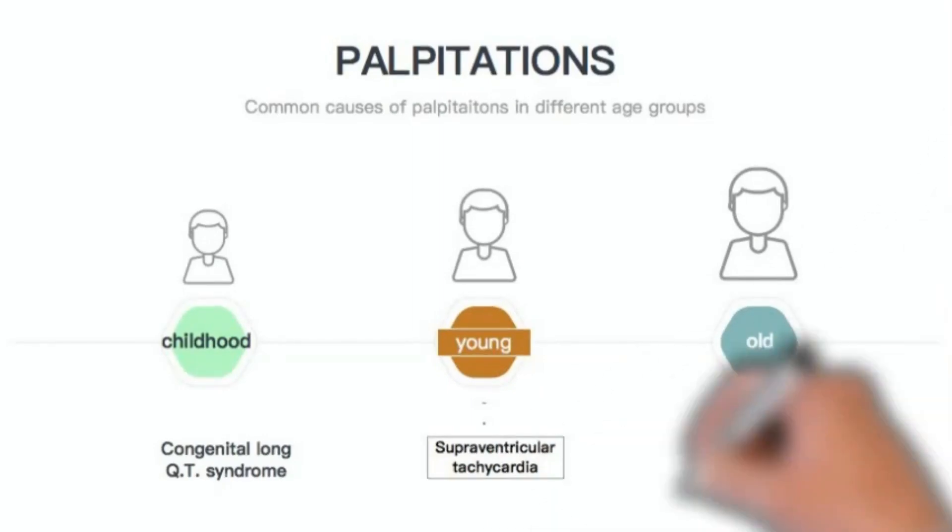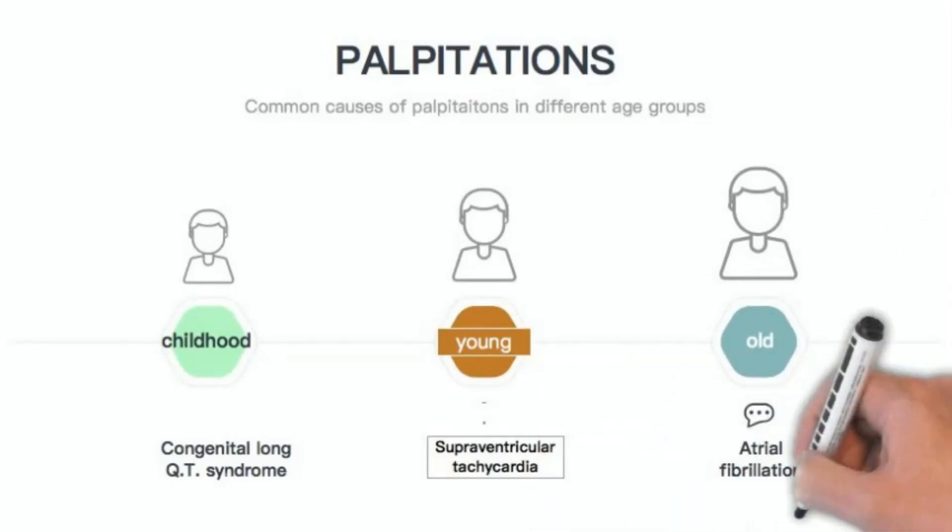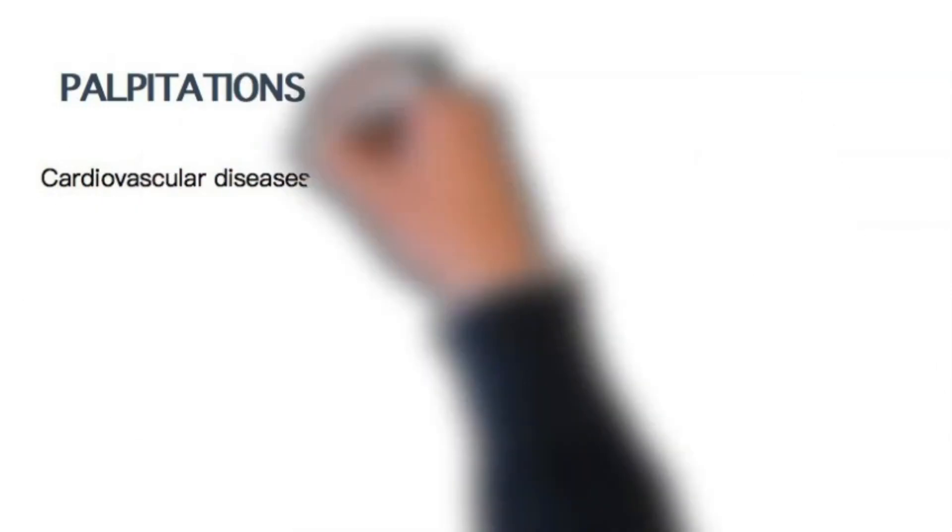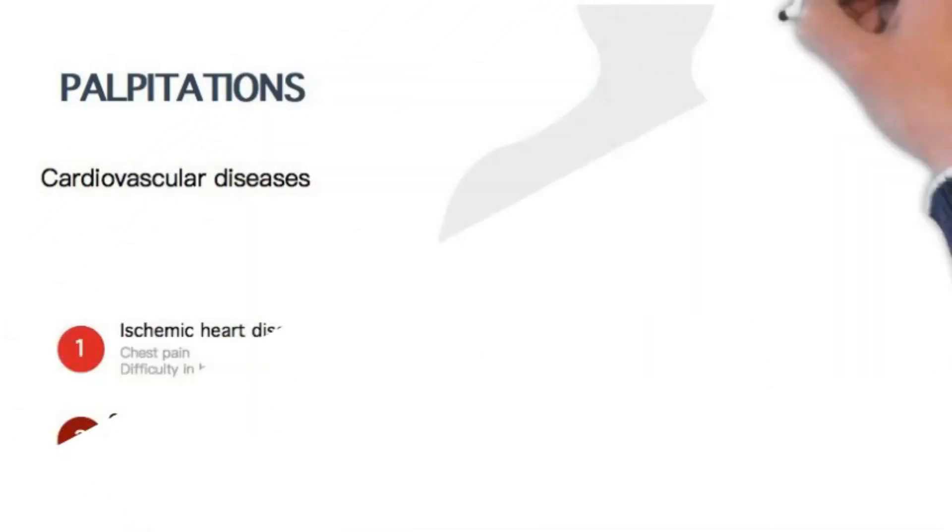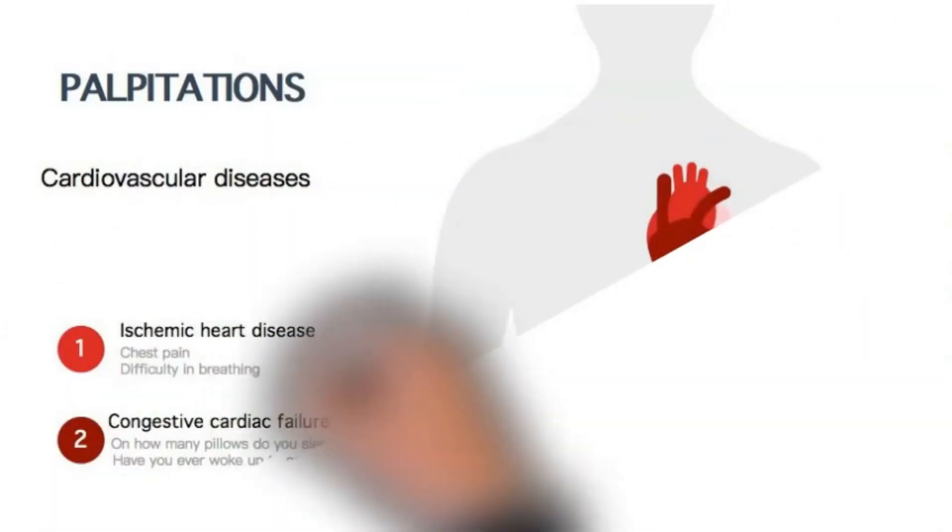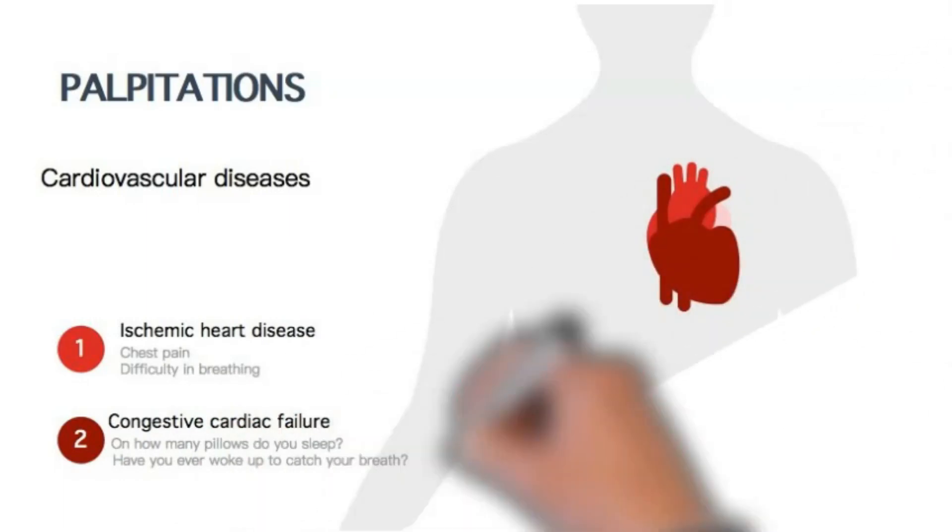At this point, we will make a quick systemic review in order to rule out possible differentials that may result in palpitations. Regarding cardiovascular diseases such as ischemic heart disease and congestive cardiac failure, ask about any associated chest pain, difficulty in breathing, or racing of heart.